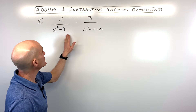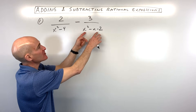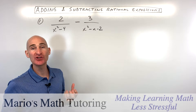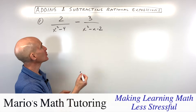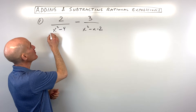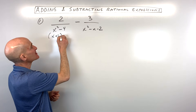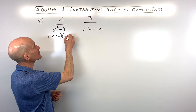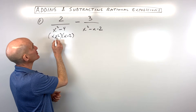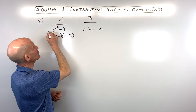The first thing you want to do is factor the denominator as much as you can. This is a difference of two squares. The way we factor that is using a sum and difference pattern, so this is going to be x plus 2, x minus 2.